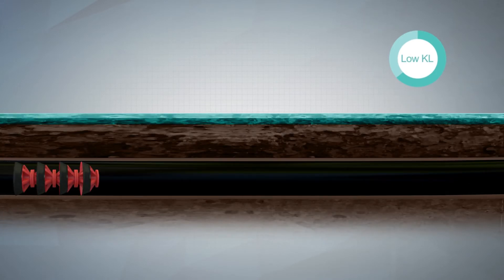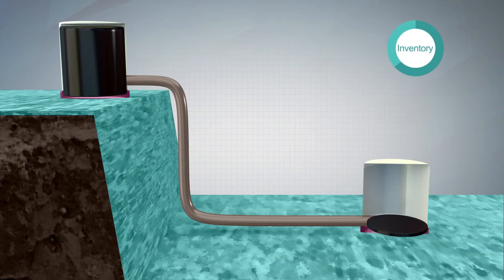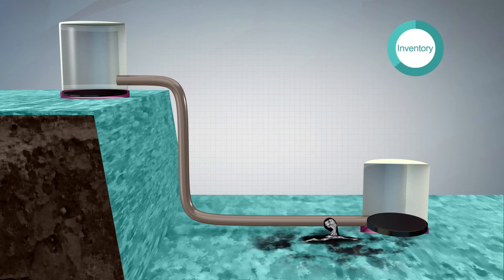The Low-KL algorithm gauges the pipeline resistance to pumping liquid through the pipeline section. The Inventory algorithm monitors the statistical probability of a large inventory reduction in the pipeline.